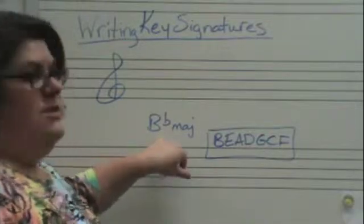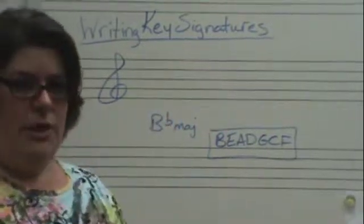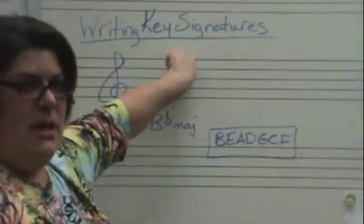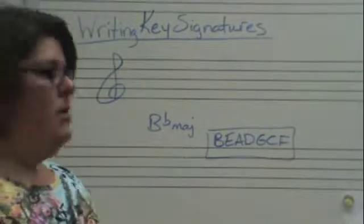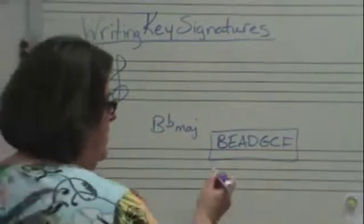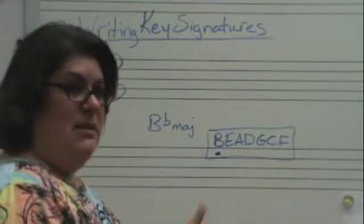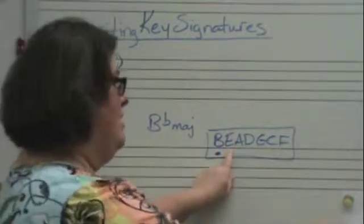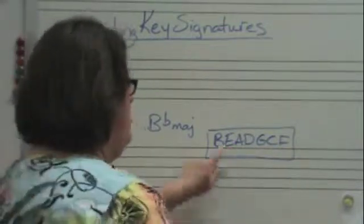B-flat is do. When we were figuring flats out earlier, we found the last flat went backwards one, and that was do. So I'm going to take do to my chart. If I came backwards one flat to get to do, it makes sense that now I go forward one flat. So put two in your key signature.